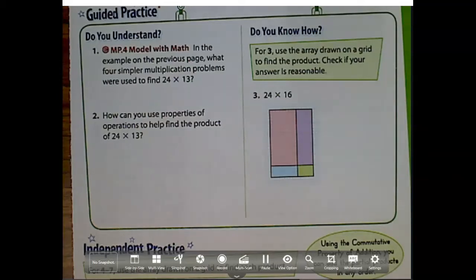Alright guys, so we're on lesson 4.5, which is arrays and partial products for two-digit by two-digit numbers multiplication.